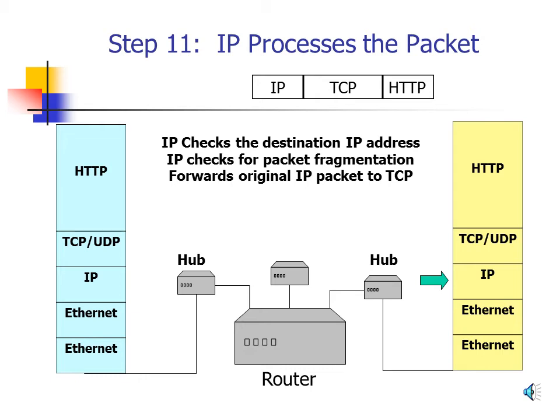Step 11: IP Processes the Packet. IP receives the packet and checks the destination IP address — in this case it matches the machine's own address, confirming it is the destination. IP then checks whether the packet has been fragmented; if so, it waits for all fragments and reassembles them into the original order. It then checks the protocol ID field, which is set to 6, indicating the payload is a TCP packet. IP then hands the TCP packet to the TCP program for continued processing.